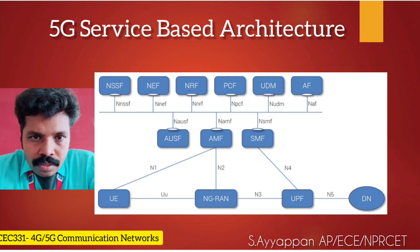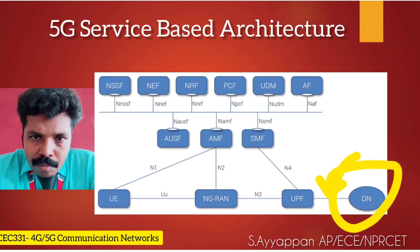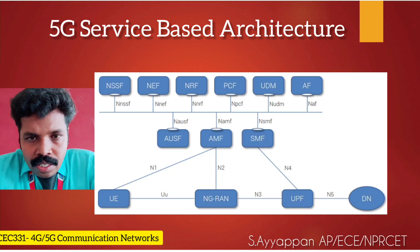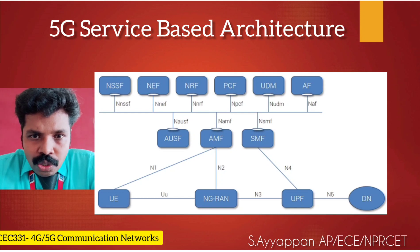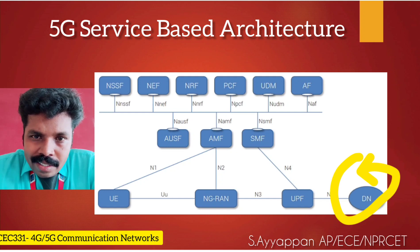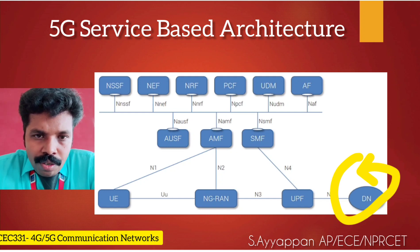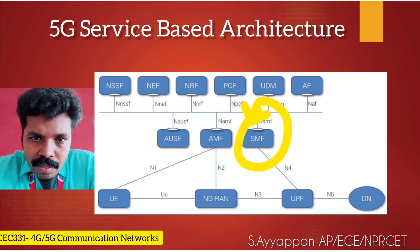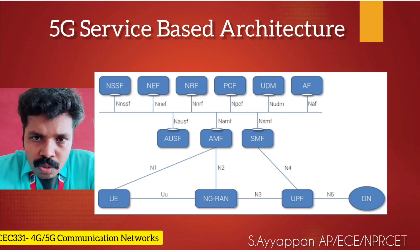UPF, or User Plane Function, is the only user plane component in the 5G core network. One end is connected to the gNodeB, and user traffic is sent to the UPF via the gNodeB. The other end connects to the data network to reach the internet or other data networks, such as a corporate network. UPF gets rules from the SMF, and those rules are used to enforce quality of service on the user plane traffic.